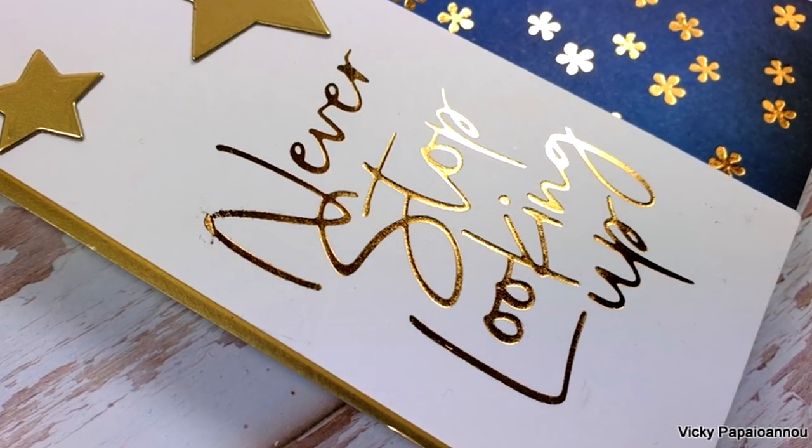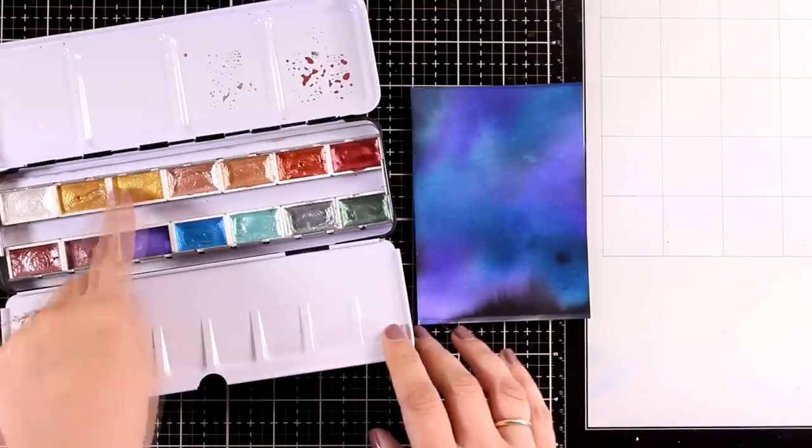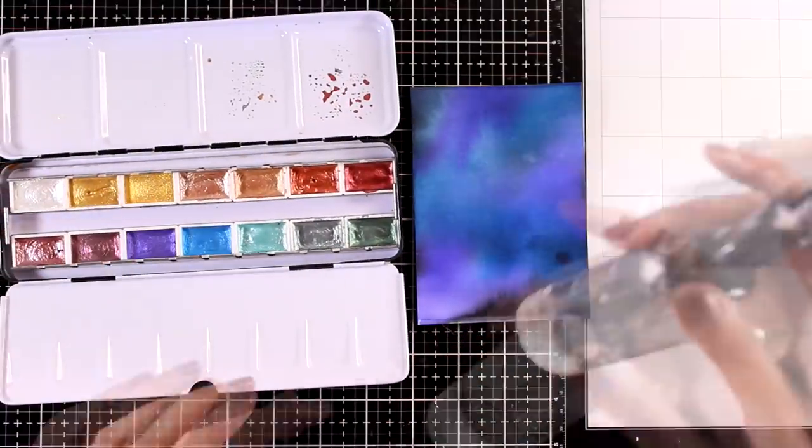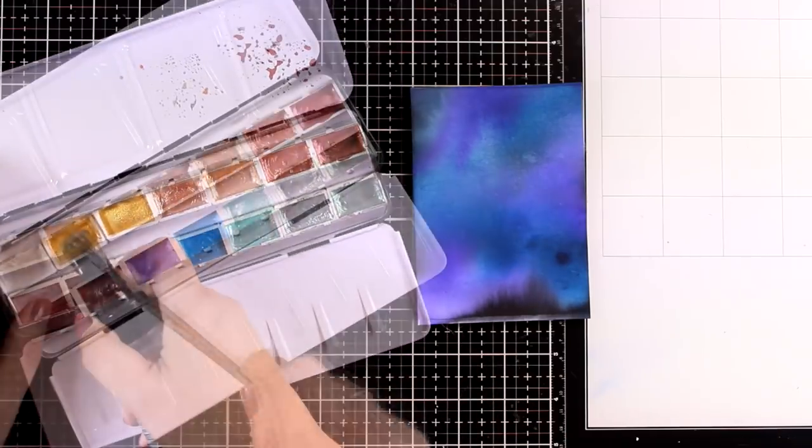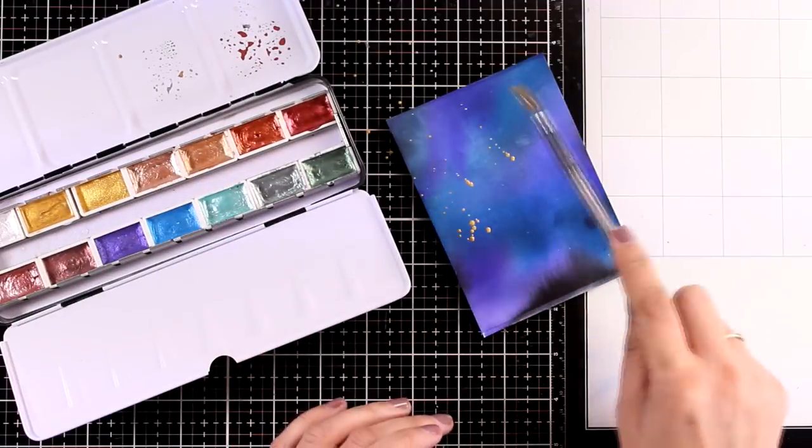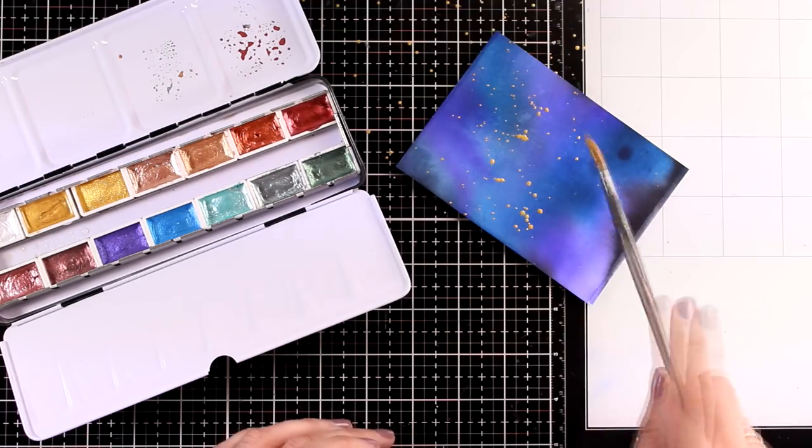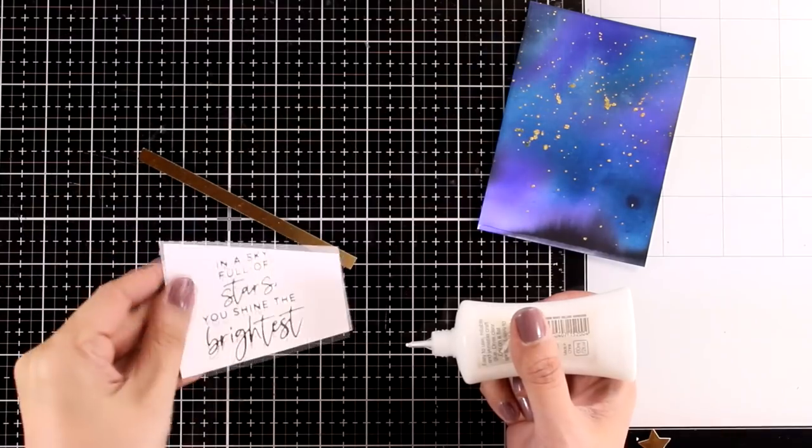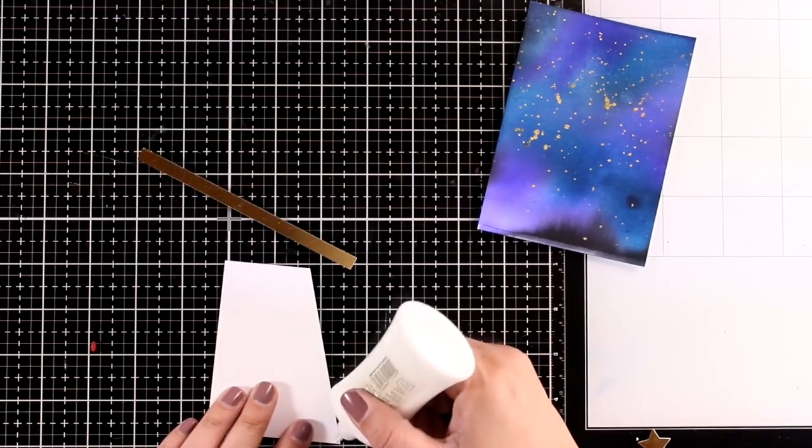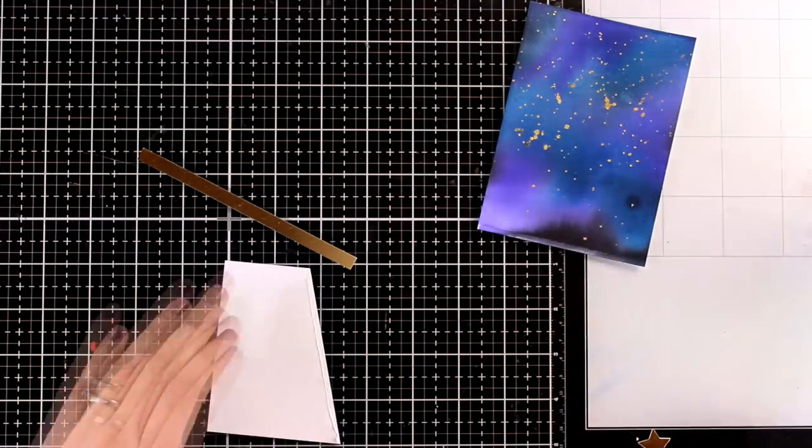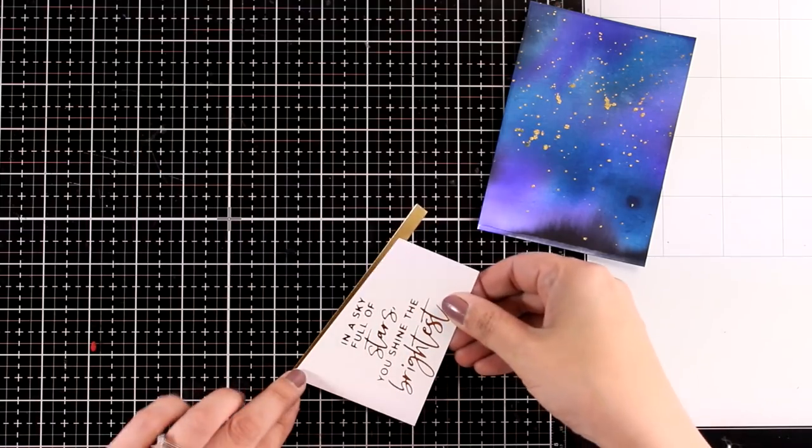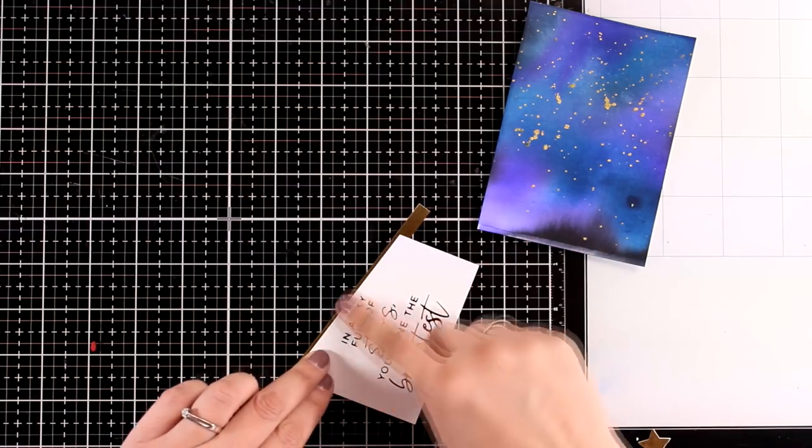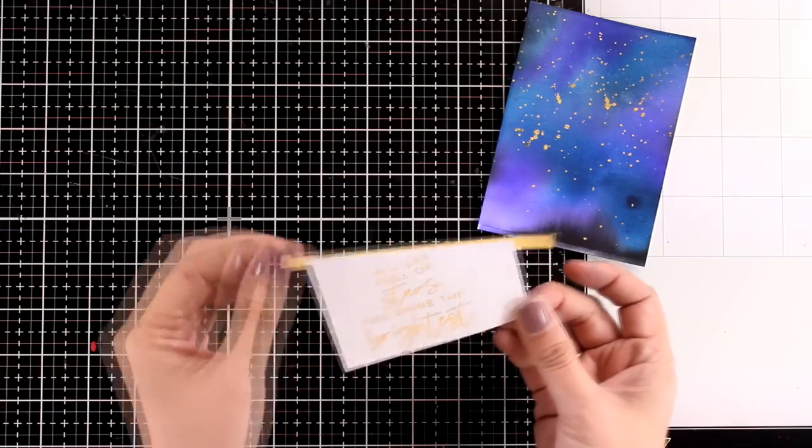And now finally let's work on the watercolor background. For that I'm going to add golden stars by just applying some splashes - I am using my metallic watercolors in gold. And I did foil with gold foil on white cardstock the sentiment that says 'in a sky full of stars you shine the brightest'. I did cut the top on an angle just for some added interest and I do add a thin strip of gold cardstock there.